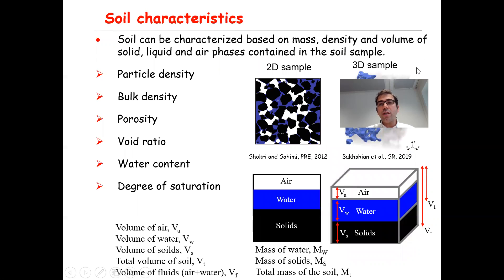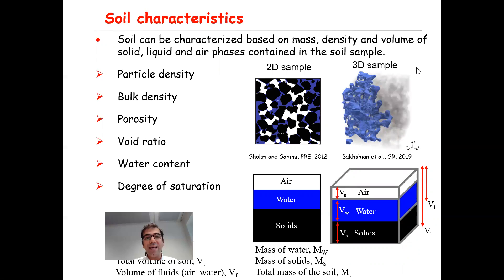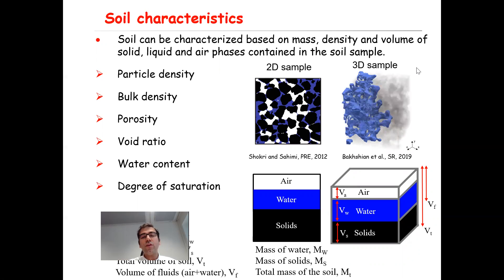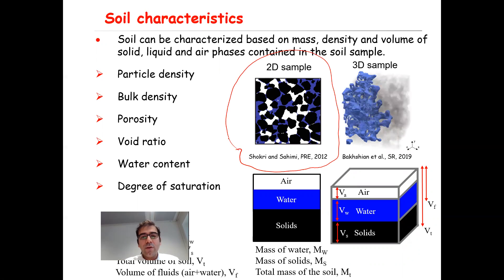So, soil characteristics. Soil can be characterized based on the mass, density, and volume of solid, liquid, and air phases contained in the soil sample. Here is a 2D sample — another result from our group published in 2012.